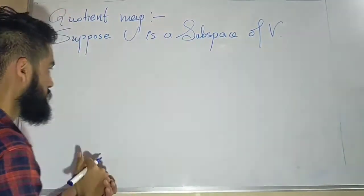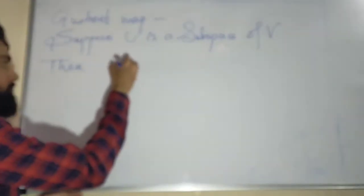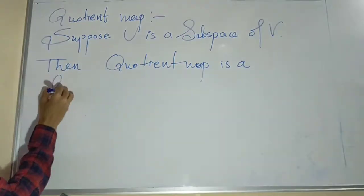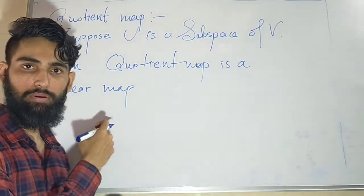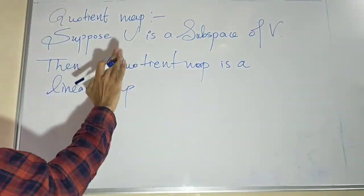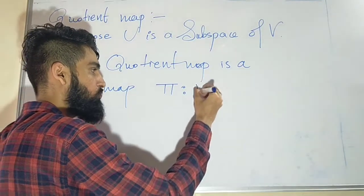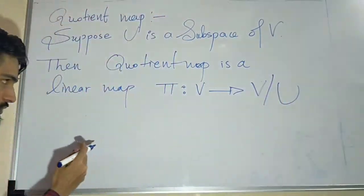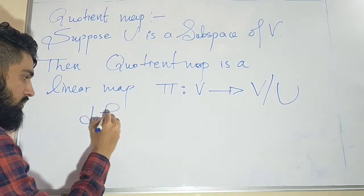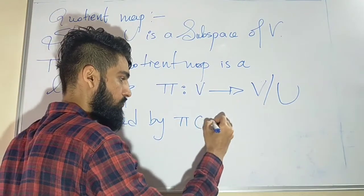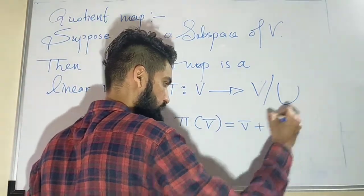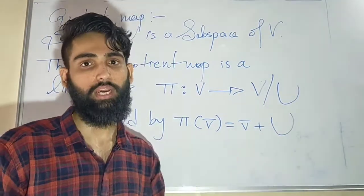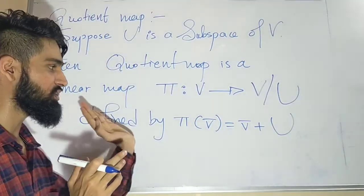Suppose U is a subspace of V. Then the quotient map is a linear transformation pi from V to V modulo U. It is defined by pi of v̄ equals v̄ plus U — meaning every vector will go to the coset with representative v̄. So the quotient map is nothing but a linear transformation defined like this.